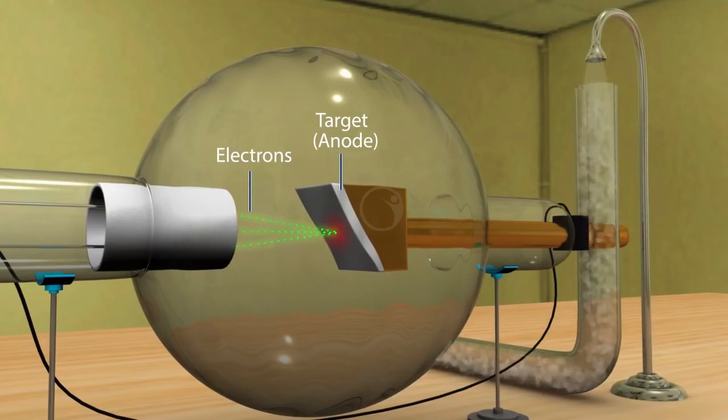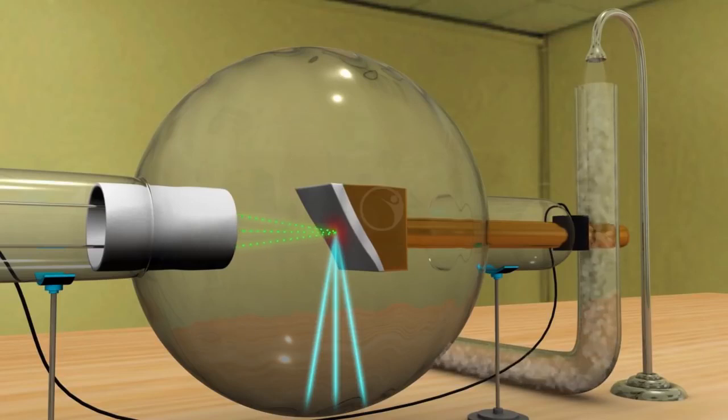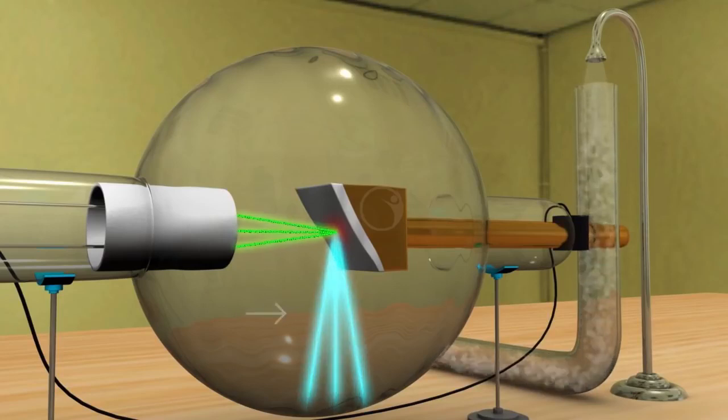When it hits, the kinetic energy is transferred to produce x-rays. The intensity of the x-rays depends on the number of electrons striking the metal target. So, if we can increase the rate of electrons emitted by the filament by increasing the current flowing through the filament, then we can increase the intensity of the x-rays.